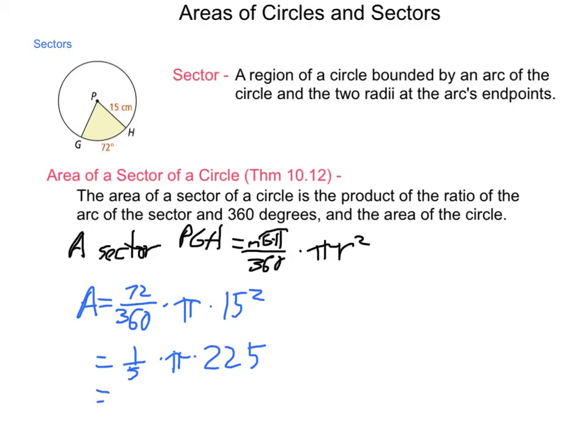Now, if we want to get a decimal approximation of this, we simply multiply the 45 by pi, and we can say this is approximately equal to 141 and 37 hundredths centimeters squared. So, we'd be able to find the area of any sector by doing this.